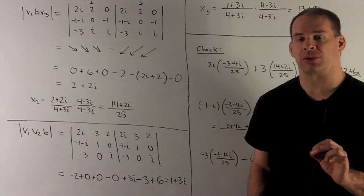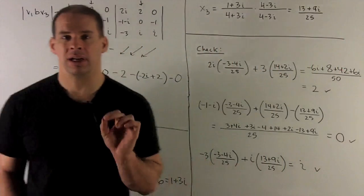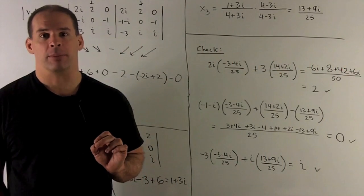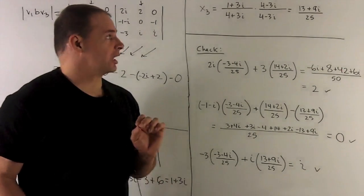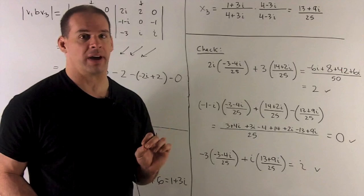We divide by 4 plus 3i. Simplify that, multiply by complex conjugate over itself. Then that's going to give us 13 plus 9i over 25.